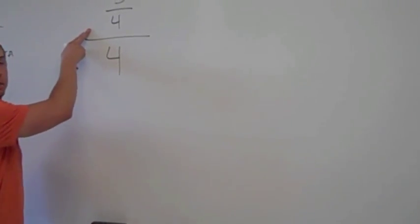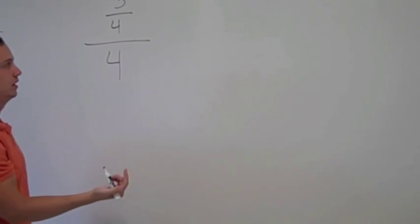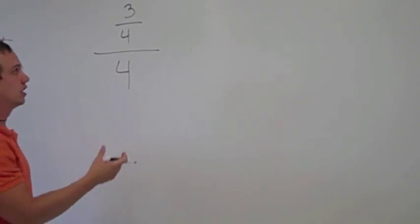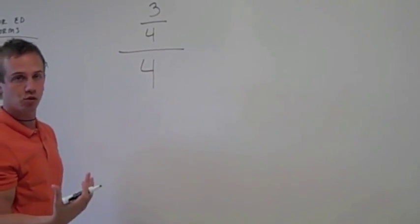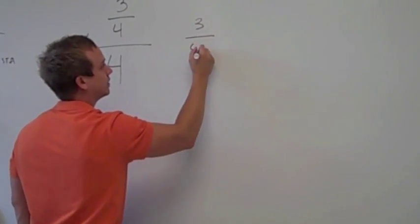So, for example, if we have 3 fourths divided by 4, this is a complex fraction. So we're going to simplify this. Remember, fractions are just another way of writing a division problem, so let's rewrite it. So we have 3 fourths divided